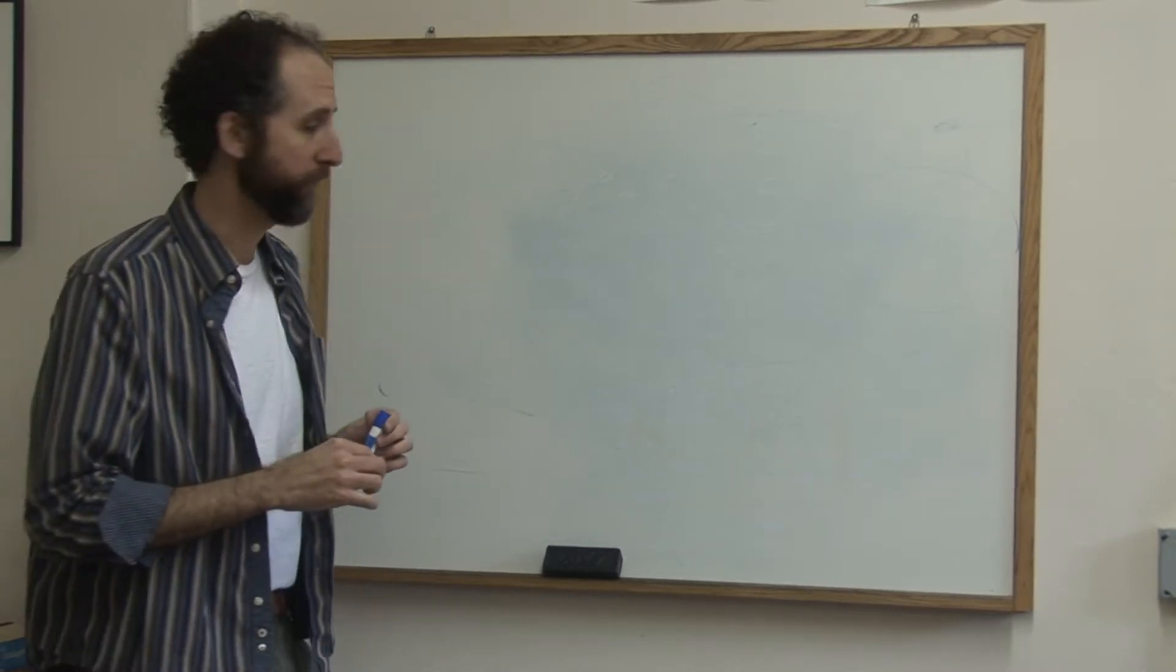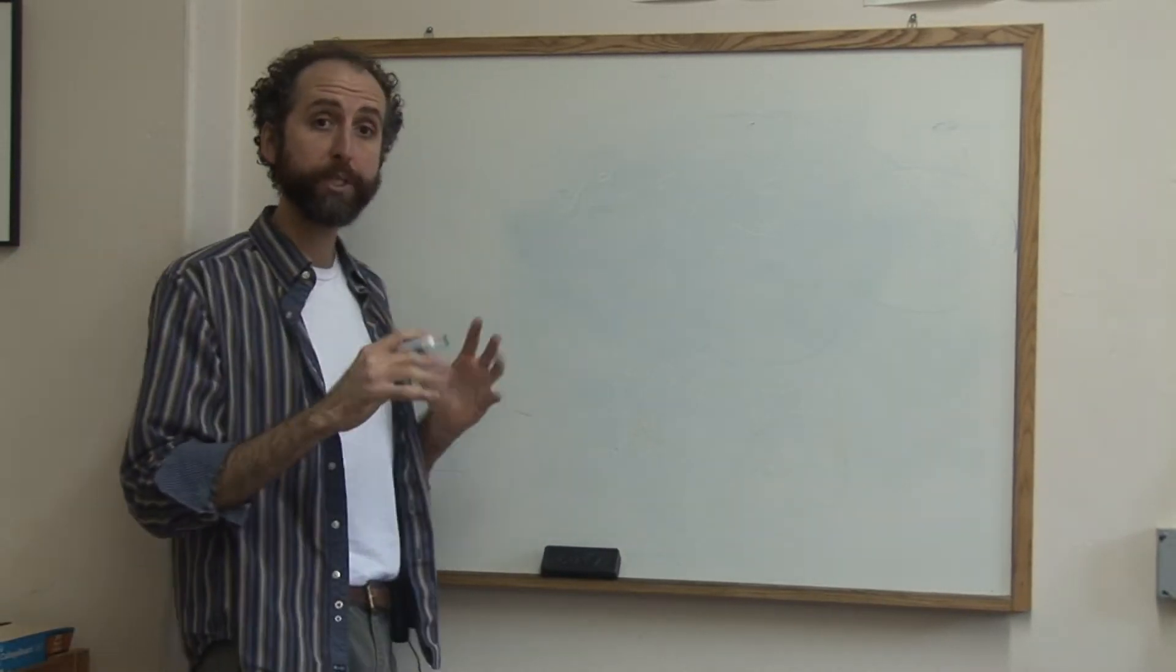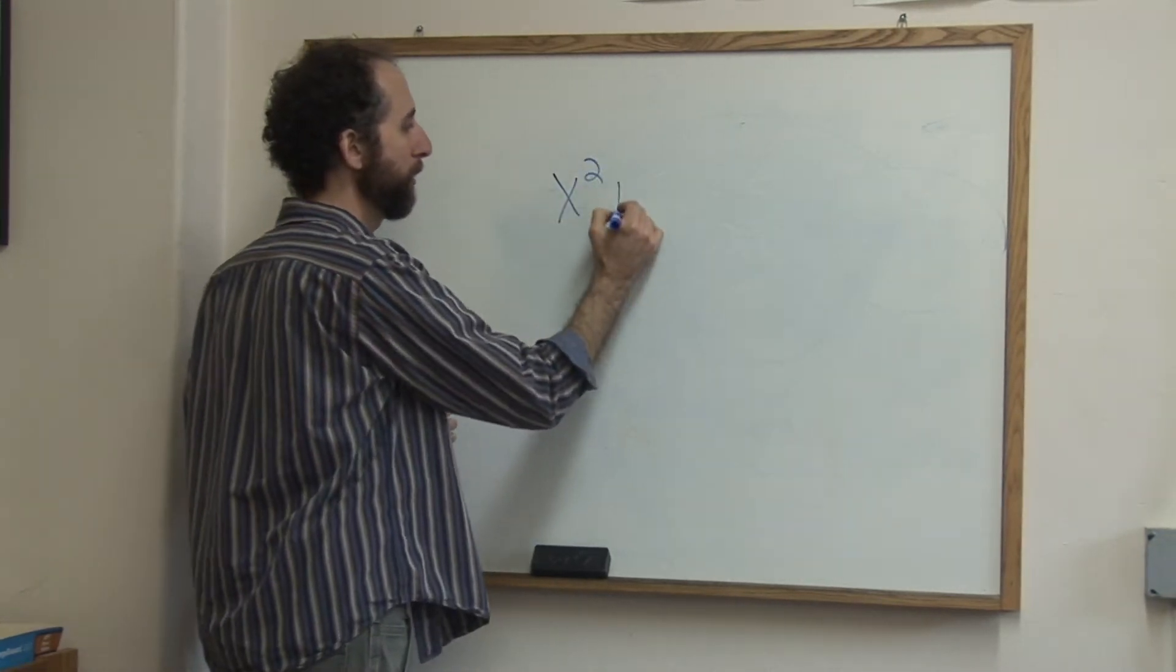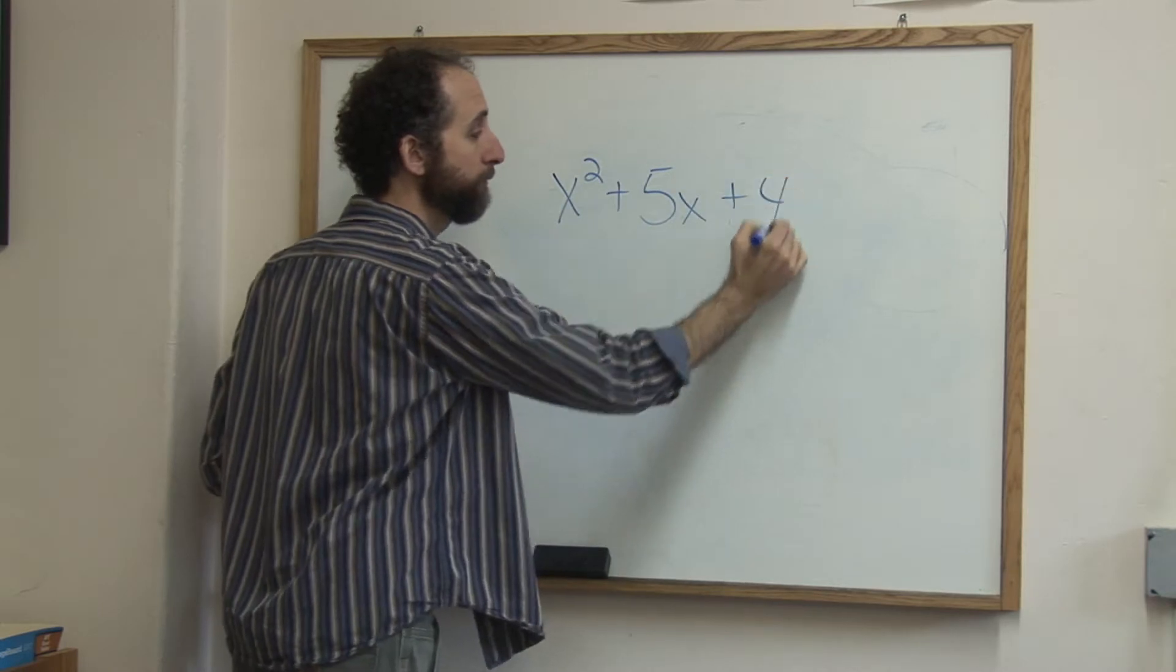Let's take a look at how to factor trinomials. We're going to do a couple different examples so you can see it from a couple different ways. First let's look at x squared plus 5x plus 4.